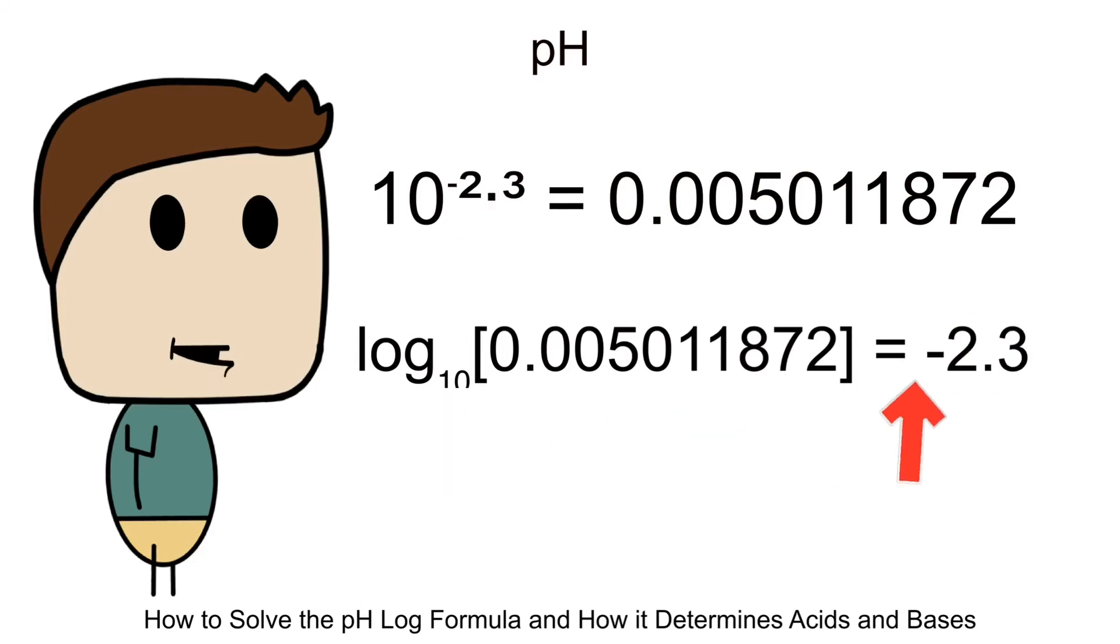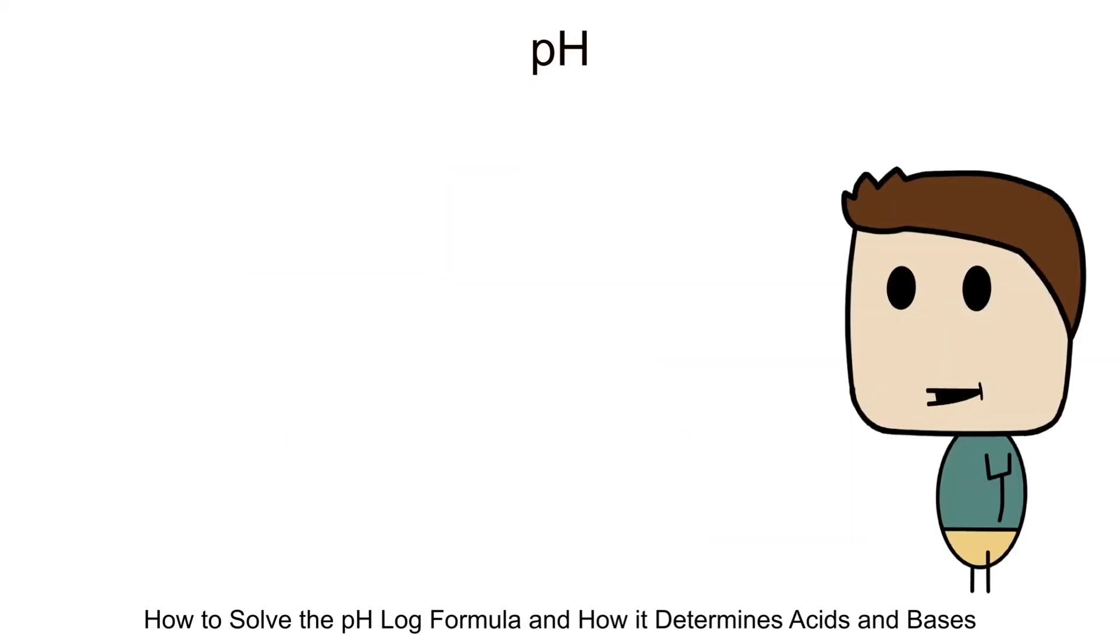This 10 to the power of negative 2.3 is 0.005011872. Make sure you understand this because this is an easy way to figure out the concentration of H plus when you are given just the pH. If you still don't get it, please ask and leave a comment below. But let's get back to the original topic regarding acids and bases.